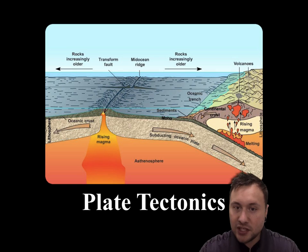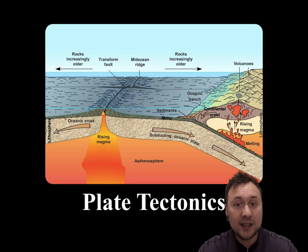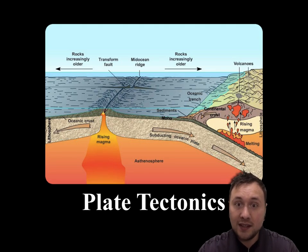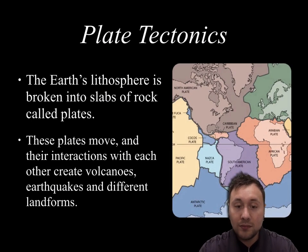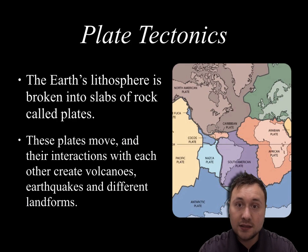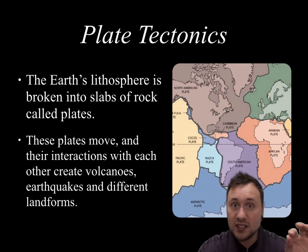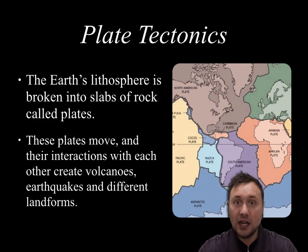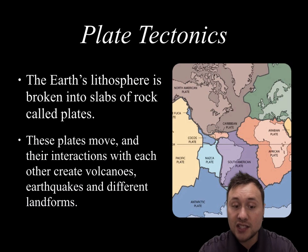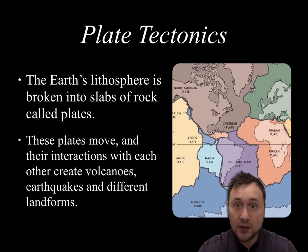Plate tectonics — this picture does a nice job of explaining the whole thing. The basic definition: the earth's lithosphere is broken into slabs of rock called plates. The lithosphere, specifically the crust, is made up of hard brittle pieces of rock and we call those tectonic plates. These plates move and their interactions with each other create volcanoes, earthquakes, and different landforms.